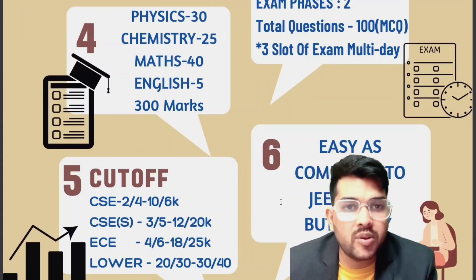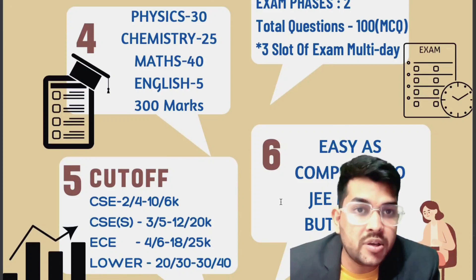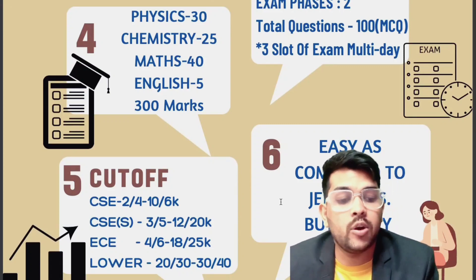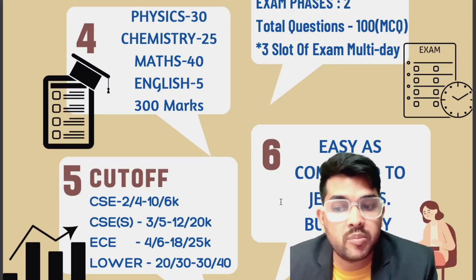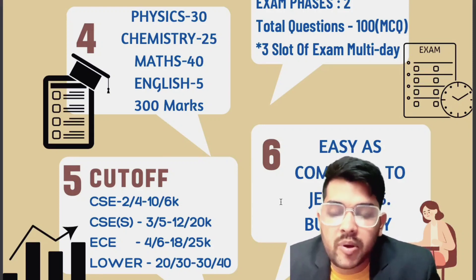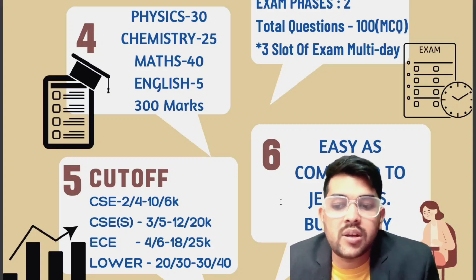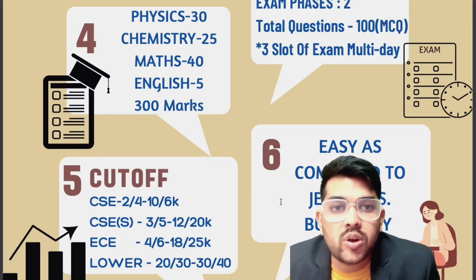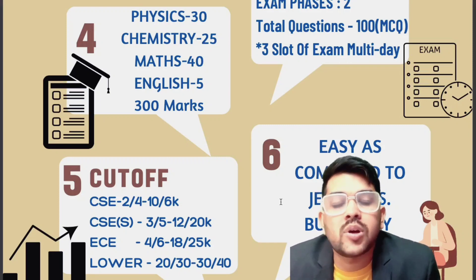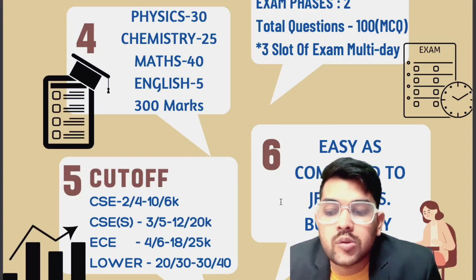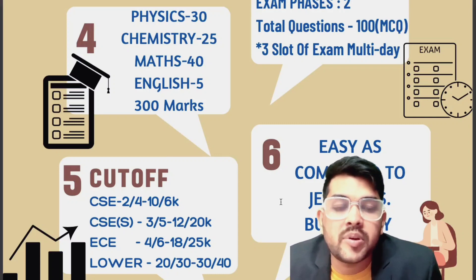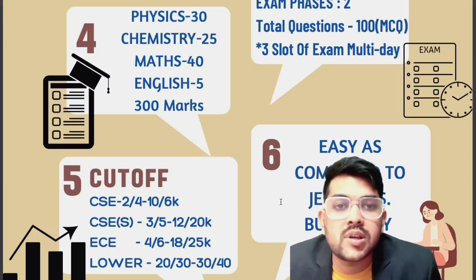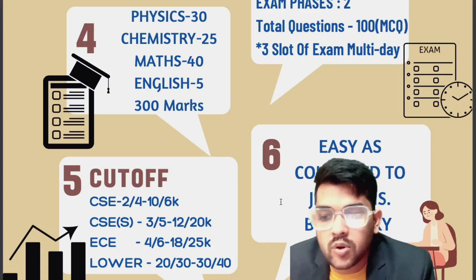Regarding the cutoff - I am giving a brief overview; I will provide a detailed video later as there are many cutoffs for homestate and other state for different branches. If your rank is between 2,000 to 10,000 and you are from another state, you are going to get a CSE branch in any one of the campuses. If you are closer to 2,000, your chance for Coimbatore is more; if you are closer to 10,000, lower campuses like Amaravati or the new campus or Chennai will be available.